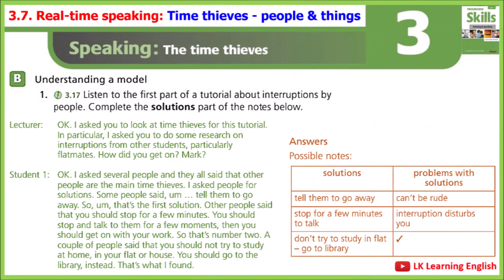3.17, Lesson 3.7: Real-time speaking - time thieves, people and things. Exercise B1: Listen to the first part of a tutorial about interruptions by people.